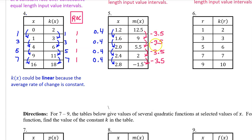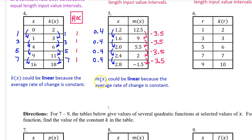For number 5, here are the changes in the output values and the changes in the input values. Because we have consecutive equal length input value intervals, we don't have to actually show the rate of change to see that it is constant. So m of x could be linear. M of x could be linear because the average rate of change is constant. Notice that for linear, we don't have to mention consecutive equal length input value intervals.